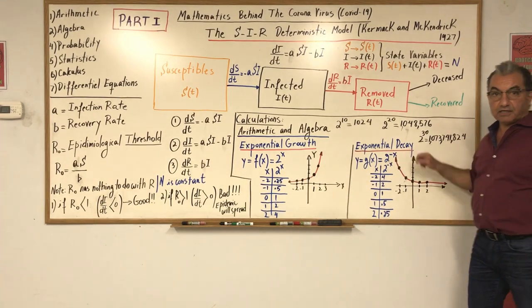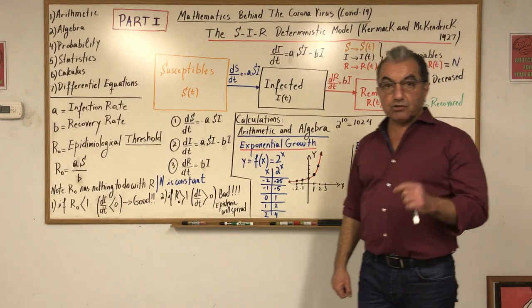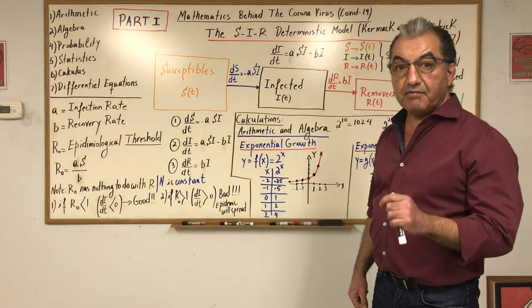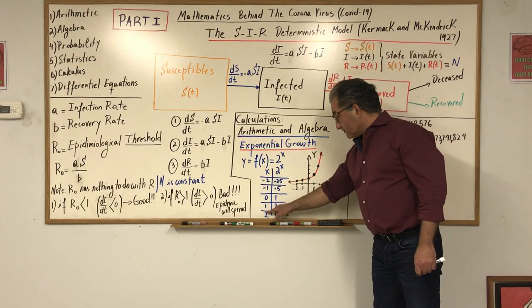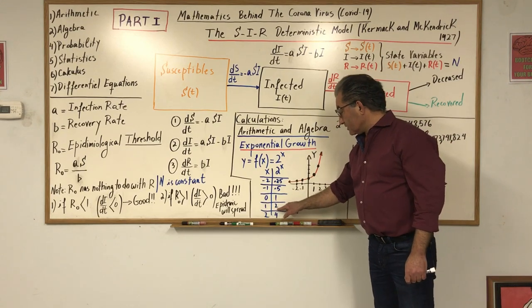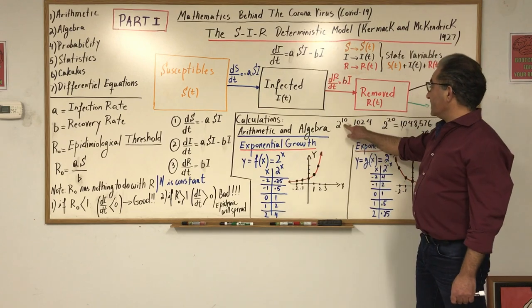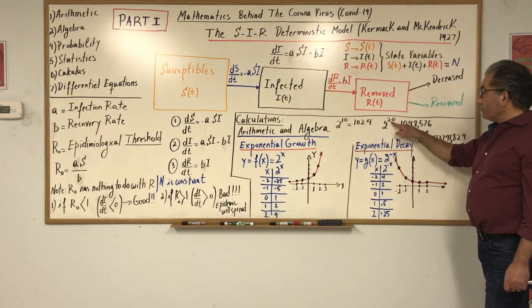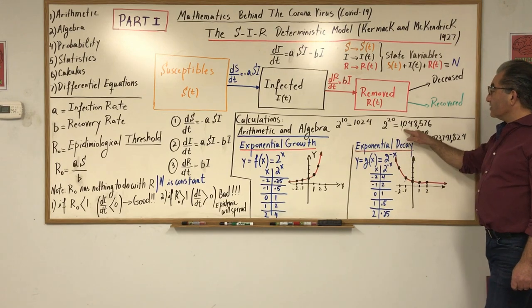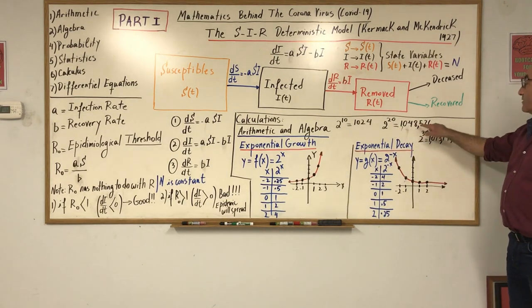Now exponential growth is a very fast growth. For example, if I start from here, 2 to the power of 1 is 2, 2 is 4. If I put 10, it jumps to 1024. If I put 20 here, 2 to the power of 20 is 1,048,576.